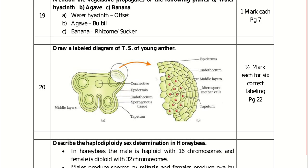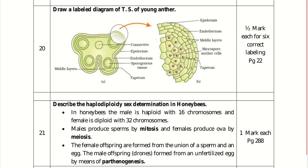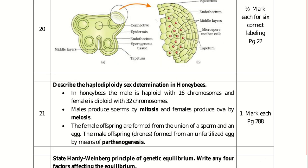Describe haplodiploidy sex determination in honeybees. In honeybees, males are haploid with 16 chromosomes, while females are diploid with 32 chromosomes. Males produce sperms by mitosis since they are already haploid and cannot undergo meiosis. Females produce ova by meiosis. Female offspring are formed by the union of haploid sperm and haploid egg, while male offspring (drones) are formed from unfertilized eggs by parthenogenesis.